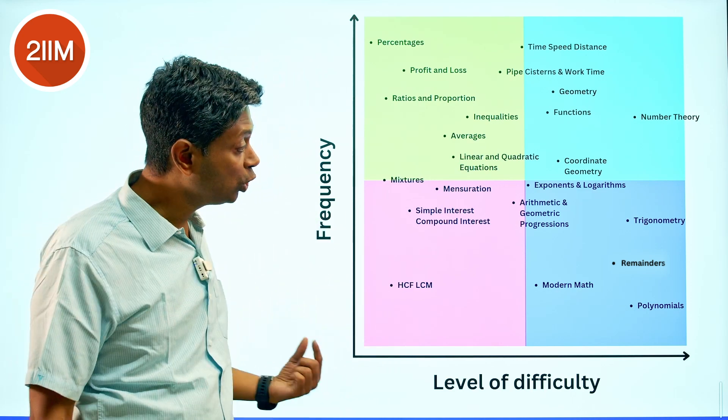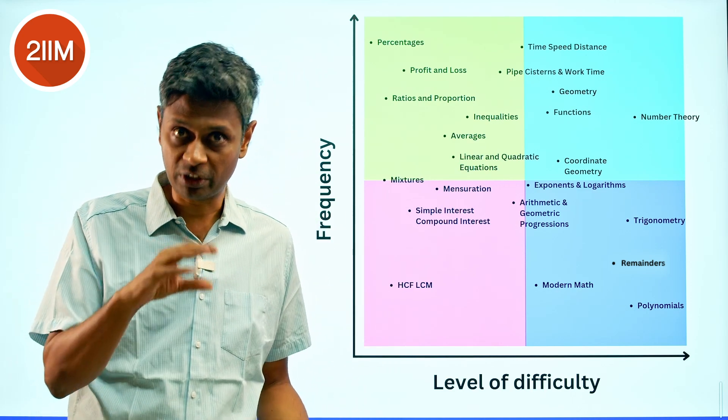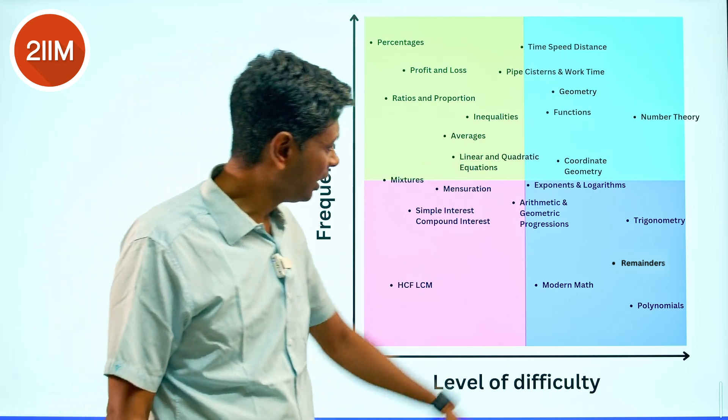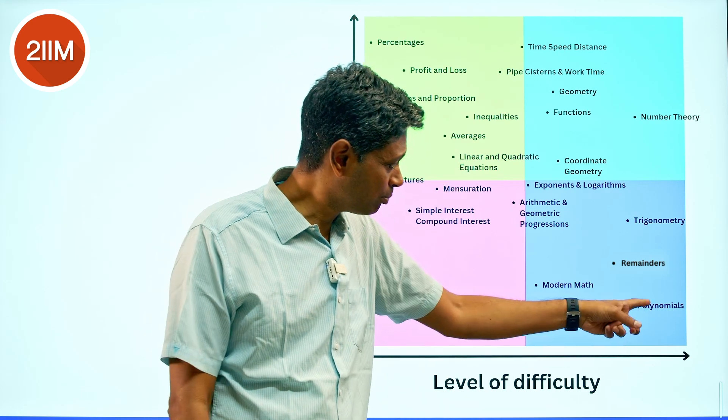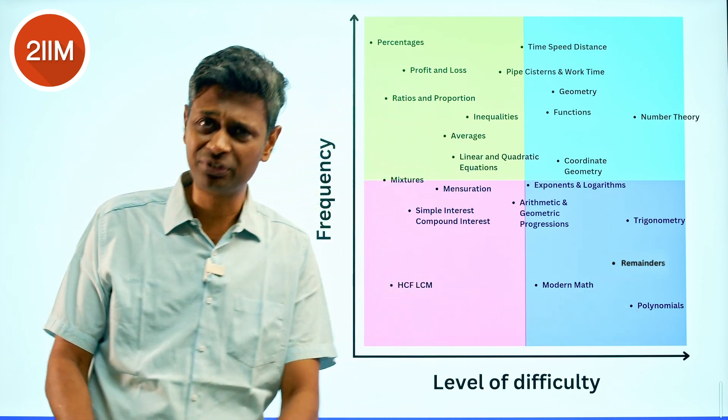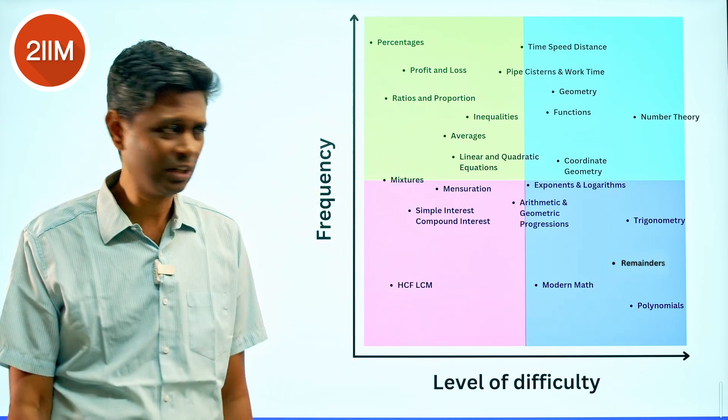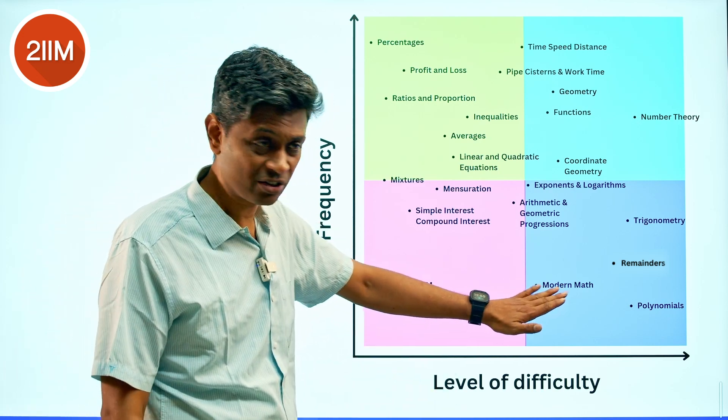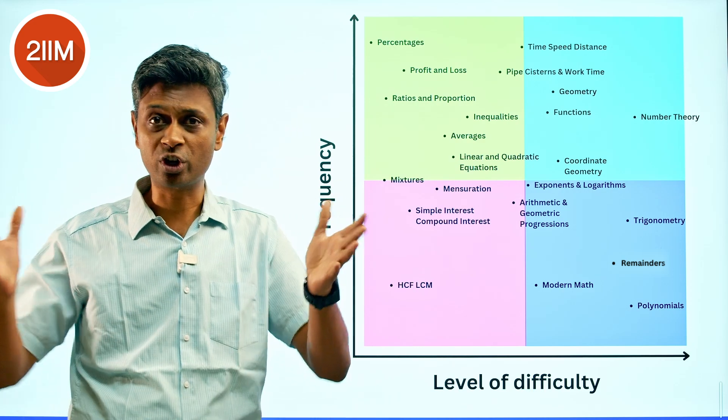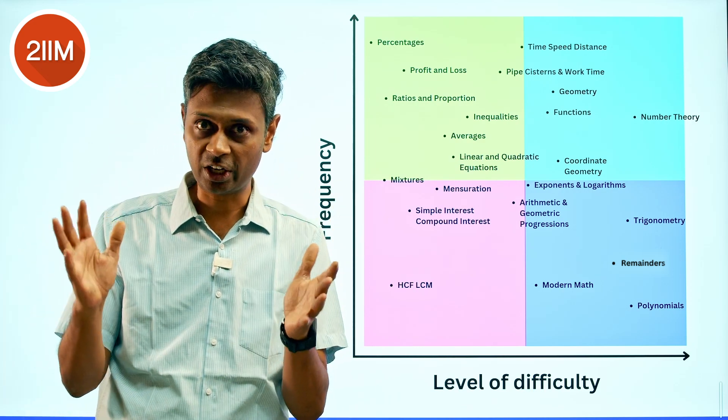Again, you have to say what do I find difficult and put them in different places. I find some topics like remainders, polynomials, modern math - to be honest, polynomials and remainders are tough, they don't get tested much. Remainders has not been tested for a long time. Modern math sometimes gets tested but it's a vast ocean. What do you call modern math? We'll have to think about it again.